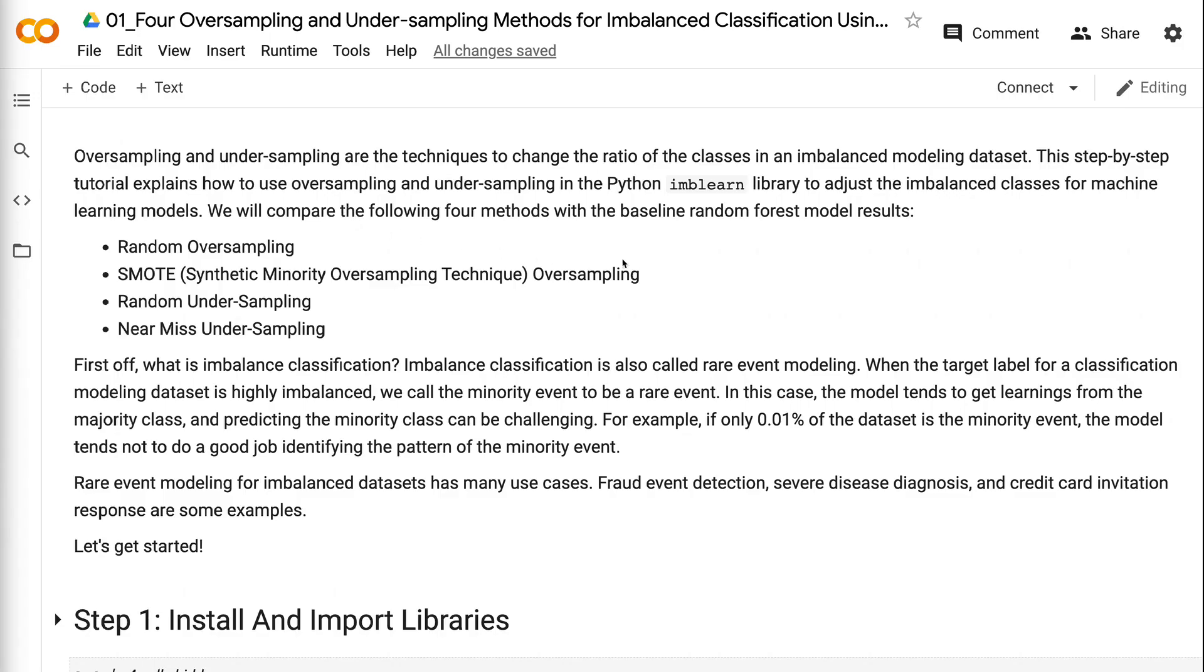First off, what is imbalanced classification? Imbalanced classification is also called rare event modeling. When the target label for a classification modeling dataset is highly imbalanced, we call the minority event to be a rare event. In this case, the model tends to get learnings from the majority class, and predicting the minority class can be challenging.